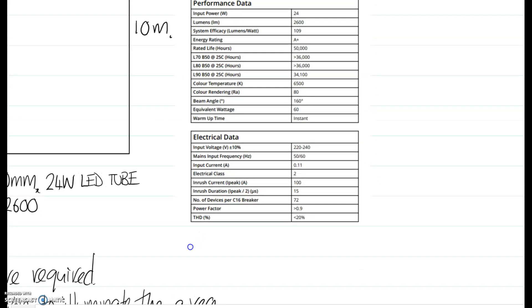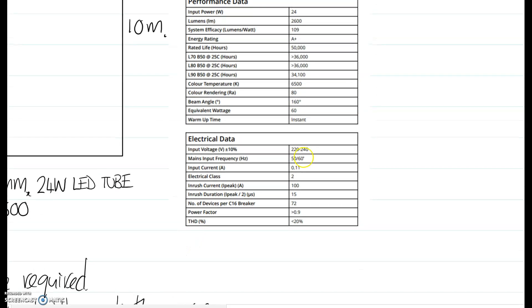If you look at the electrical data, you can see there is an inrush there, but basically ignoring the inrush for now, power factor is greater than 0.9, and it says there the number of devices per 16 amp circuit breaker is 72. So you can only put 72 fittings on a C16 breaker.